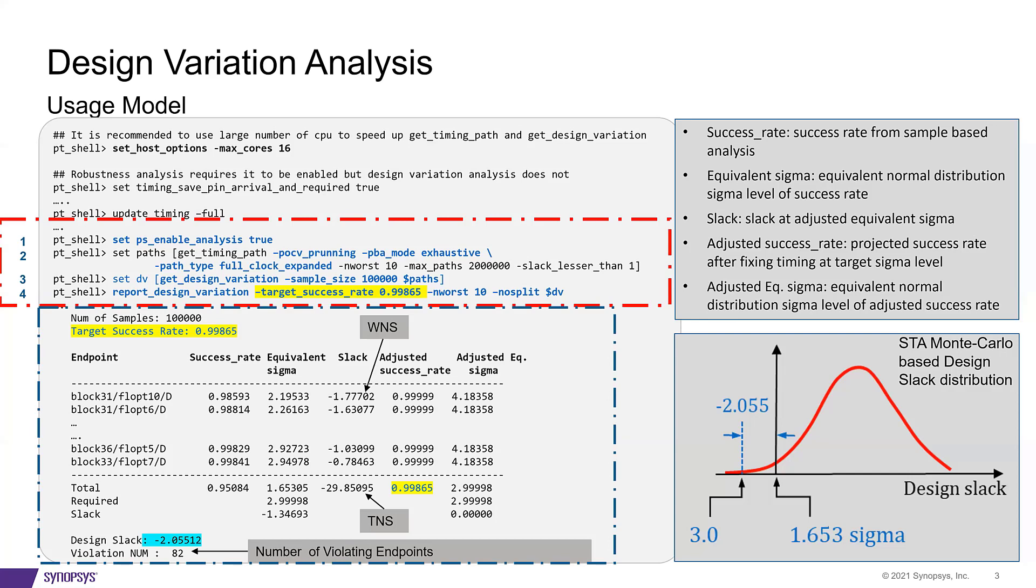The fifth column is the adjusted success rate, which is the endpoint success rate after the timing is fixed at that endpoint. Finally, the adjusted equivalent sigma, which is the equivalent sigma level corresponding to the adjusted success rate.